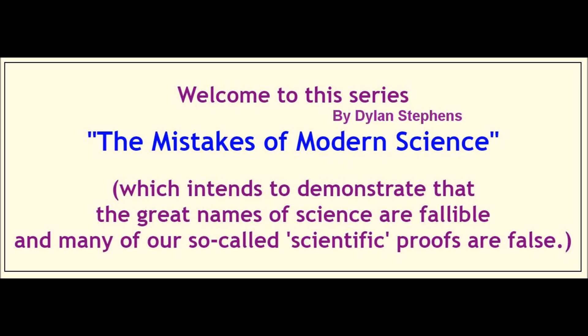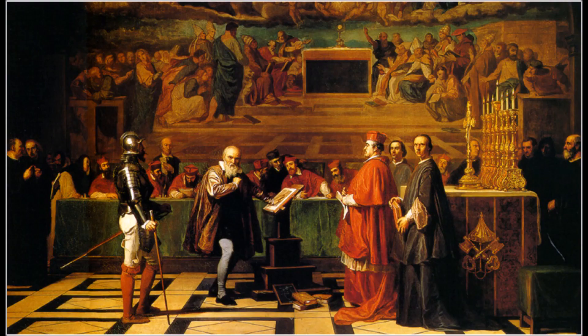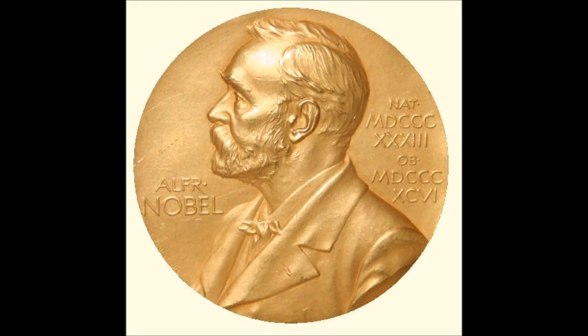Welcome to this series, The Mistakes of Modern Science, which intends to demonstrate that the great names of science are fallible and many of our so-called scientific proofs are false. Once it was the Church that protected religion from science. Now it is science that protects science from science.